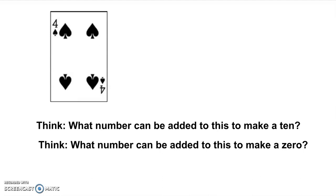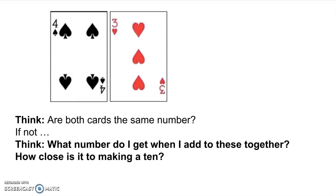So here comes the next card. The next card is three. So the cards are not the same number. They're not going to make a zero. So I'm going to think, what number do I get when I add these together? So I'm adding a four and a three, and I'm getting seven. And I'm thinking, well, how close is a seven to a ten?